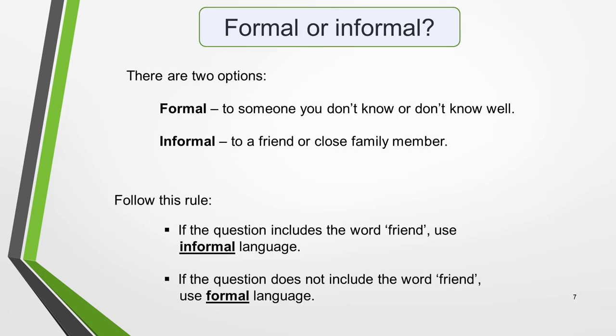IELTS letters must be written in the appropriate tone and style. There are two options: formal, to someone you don't know or don't know well, and informal, to a friend. It's essential that you're able to identify what type of letter you're required to write. Follow this rule: if the question includes the word 'friend', use informal language; if it does not, use formal language. The only exception is a letter to a close family member, where you would also use an informal tone. One situation that can be confusing is where the person you have to write to is a neighbour — assume that you do not know them very well and keep the letter formal.